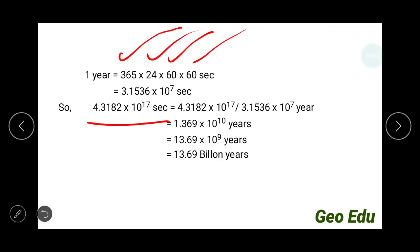So the value is 1.369 into 10 to the power 10 years, equal to 13.69 into 10 to the power 9 years. 10 to the power 9 is equal to 1 billion, so 13.69 billion years is the age of the universe.